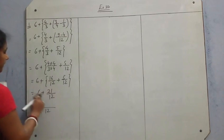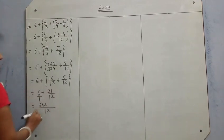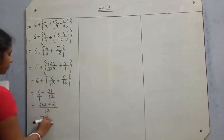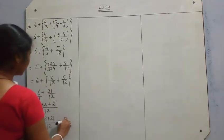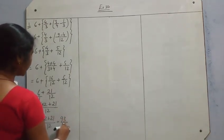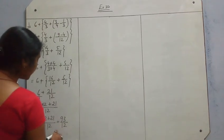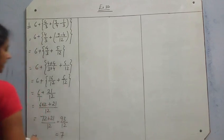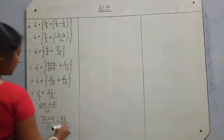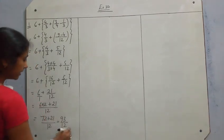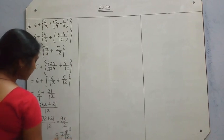So we get 72 plus 21 by 12, which is 93/12. This is an improper fraction, so we have to change it to a mixed fraction. 12 goes into 93 — 7 times 12 is 84, leaving remainder 9. So 9/12 can be cancelled by 3: 3 threes are 9 and 3 fours are 12. The answer is 7 and 3/4.